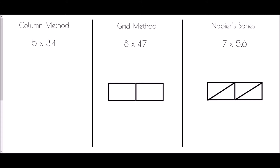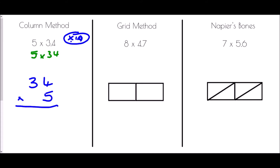We've got 5 times 3.4. Personally, I prefer to change the values we're actually working with. If I ignore the decimal point it becomes 5 times 34. I need to be careful here — I've changed this question from being multiplied by 3.4 to being multiplied by 34, which means I've actually multiplied by 10. So we set up the column exactly as before: 34 times 5. 5 times 4 is 20, write down the 0, carry the 2. 5 times 3 is 15 plus the 2 is 17. So 5 times 34 is 170.